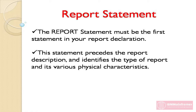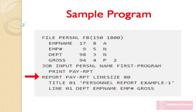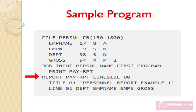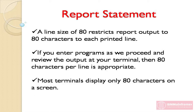The Report Statement must be the first statement in your report declaration. This statement precedes the report description and identifies the type of report and its various physical characteristics. In our sample program, we identify the report by name — pay-rpt — and specify a line size of 80, but both of these properties are optional, because our program has only one report. We could have left the report name off both the print and the report statements.